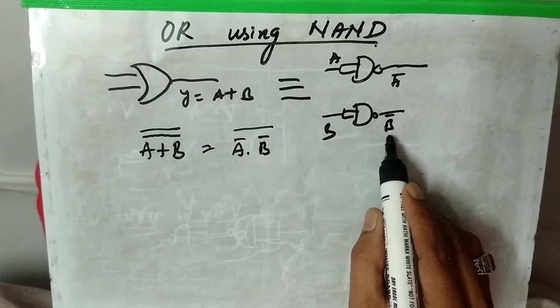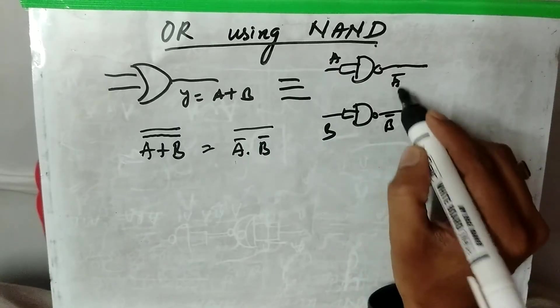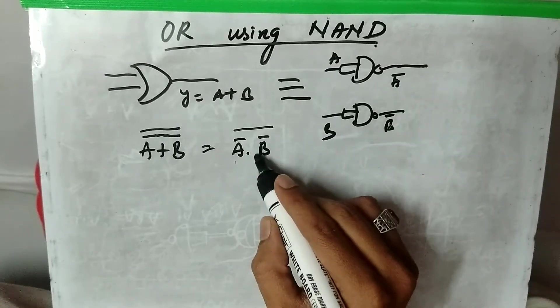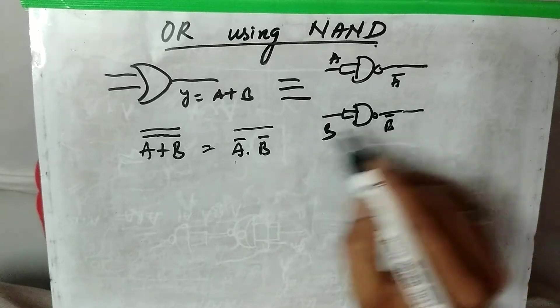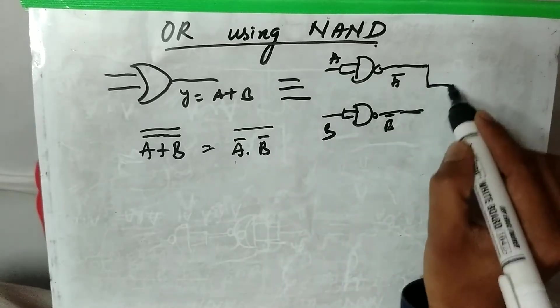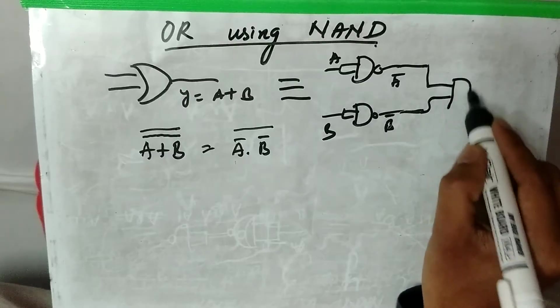This is A bar input and B bar input, two inputs we got. Now you are going to NAND it because this is a NAND output, NANDing and giving to another NAND gate.